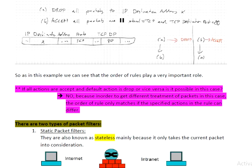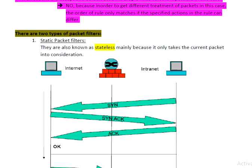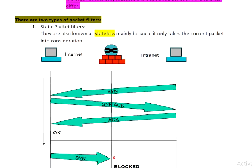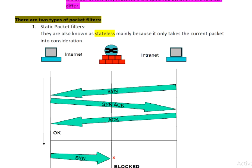Now, the next question is about packet filtering types. We know that there are two types of packet filtering: static packet filtering and dynamic packet filtering. Static packet filtering is also known as stateless, which is a very important thing. It is static because it takes the current packet into consideration. You can see this TCP sequence.